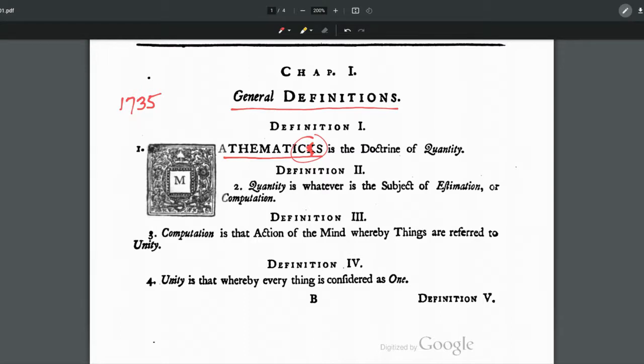Definition number one is mathematics is the doctrine of quantity. Our second definition is a definition of quantity. If we ask the question, what is quantity? Quantity is whatever is the subject of estimation or computation. That's our second definition to be memorized. Computation here is defined in definition number three.